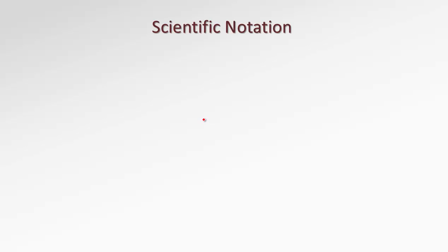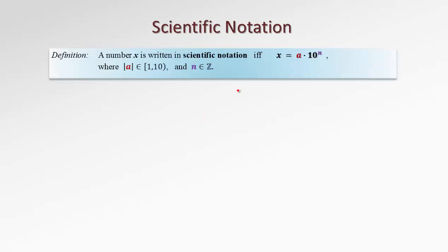In this lesson we'll talk about scientific notation. When we deal with very large numbers or very small numbers, like in sciences, to make it more convenient to record those numbers, we use scientific notation. A number x is written in scientific notation if and only if this number can be expressed in the form a times a certain power of 10.